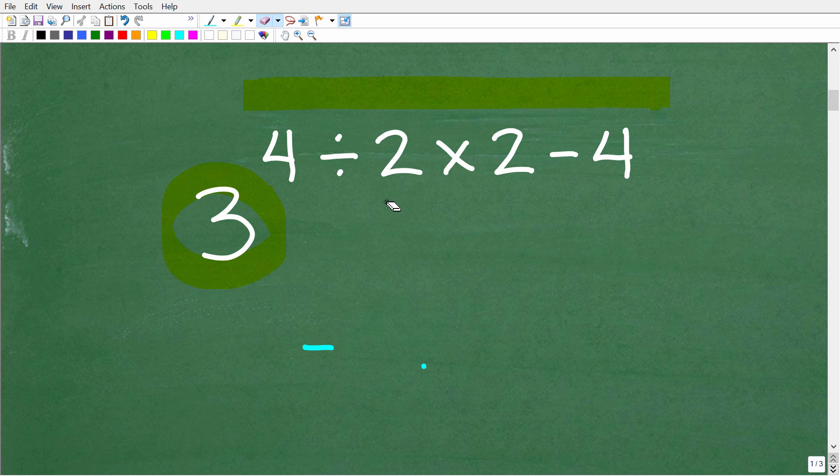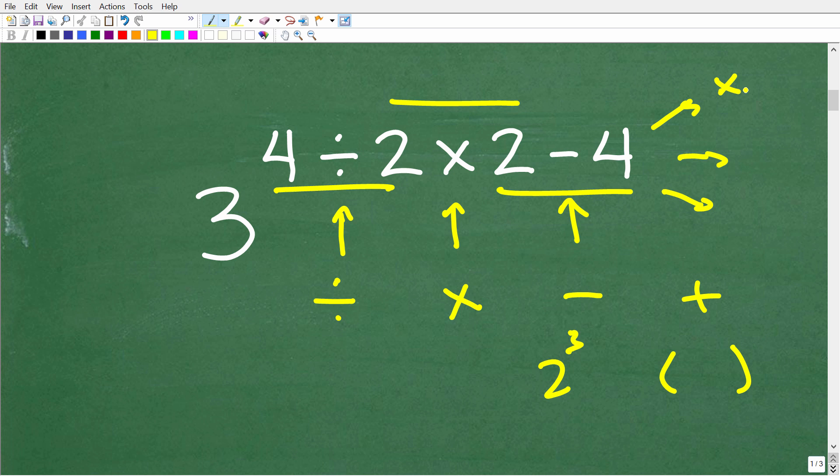This brings us to a critical part of basic math - the order of operations. A mathematical operator is division, multiplication, subtraction, addition, powers, and even parentheses. The order in which you do this problem will generate different values. If we start with subtraction, then division, then multiplication, we get one value. If we start with multiplication, then division, then subtraction, we get another value.